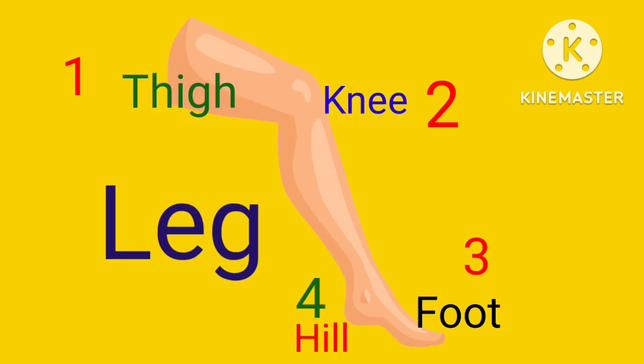Parts of leg. Thigh. Number one: T-H-I-G-H. Thigh. Number two: Knee. K-N-E-E. Knee. Number three: Foot. F-O-O-T. Foot. Number four: Heel. H-E-E-L. Heel.